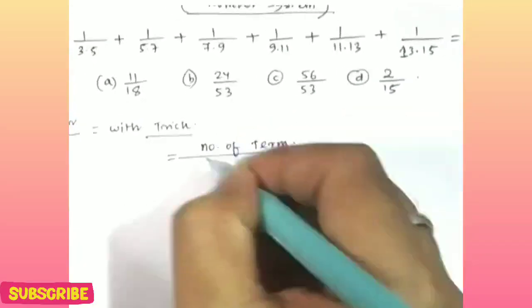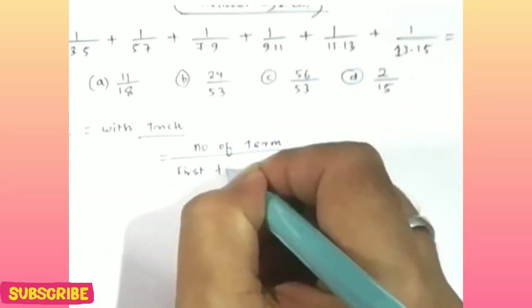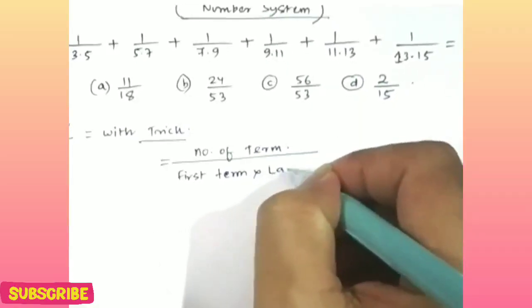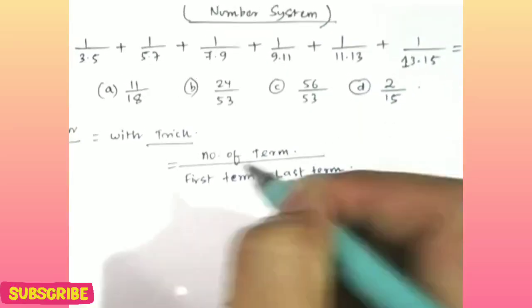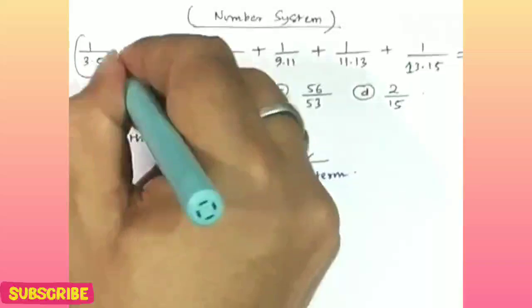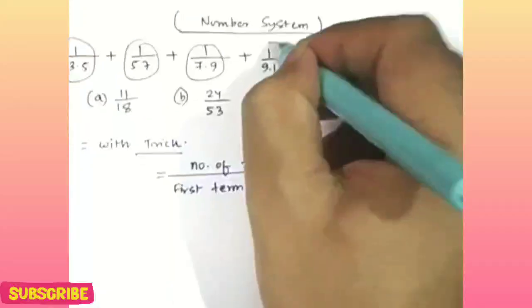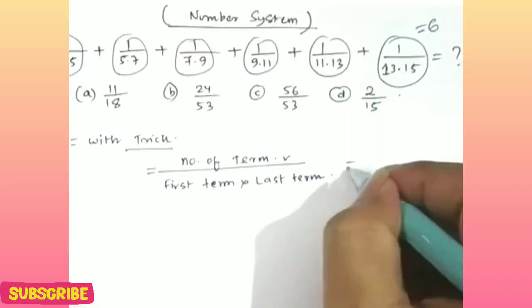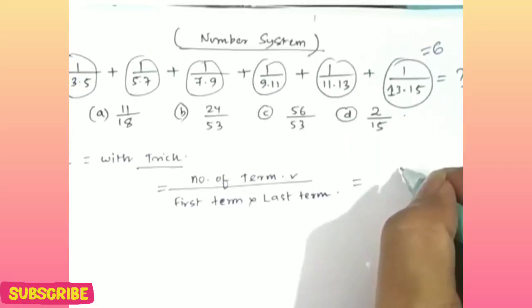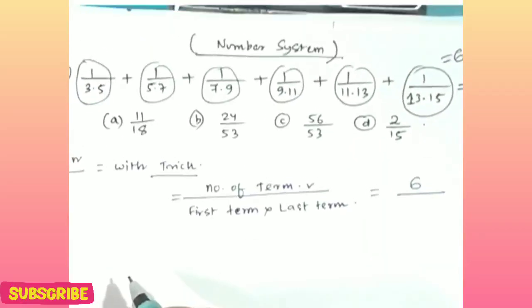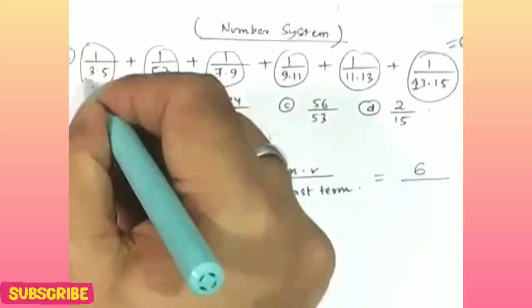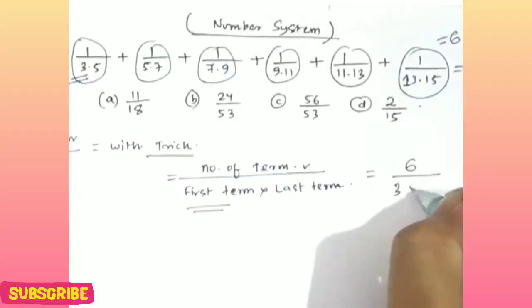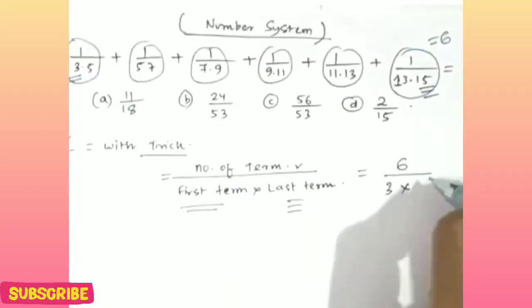Number of terms divided by first term into last term. What is the number of terms here? You can see it is 6 number of terms, and the first term is 3 and the last term is 15.